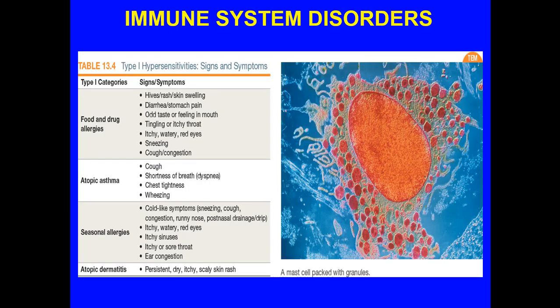There's also a term called allergic rhinitis — an allergic response to an allergen marked by nasal inflammation and sinus pressure — more of a localized response than a systemic one. Signs and symptoms of Type 1 hypersensitivities include: for food and drug allergies — odd taste in the mouth, itchy watering red eyes, tingling and itchy throat, sneezing, cough, congestion. With atopic asthma, you'll see wheezing, chest tightness, shortness of breath (dyspnea), and cough.